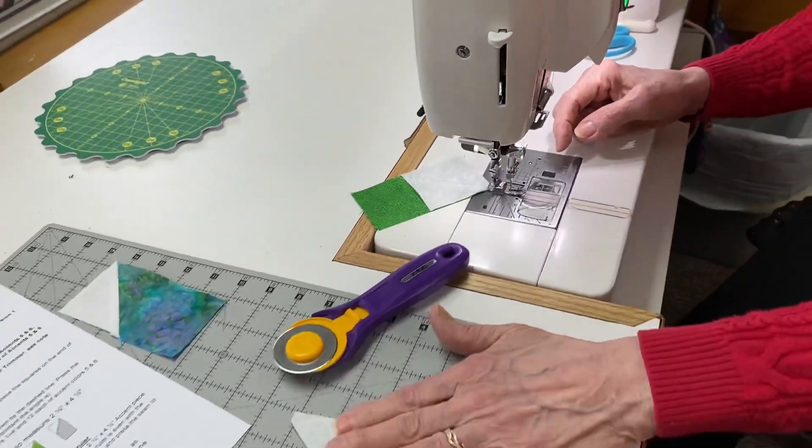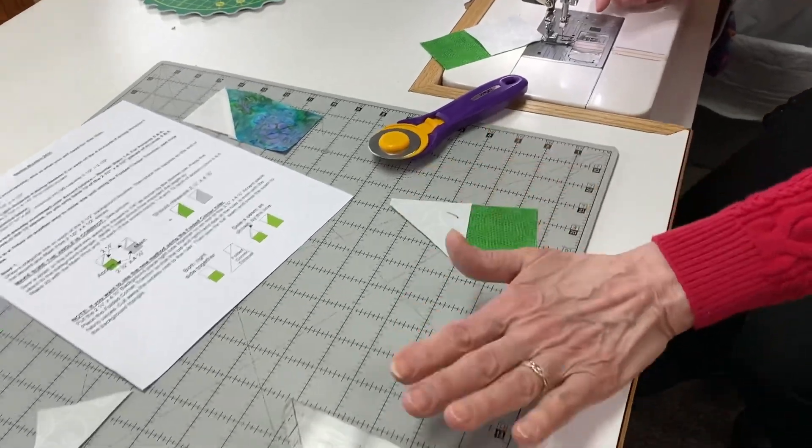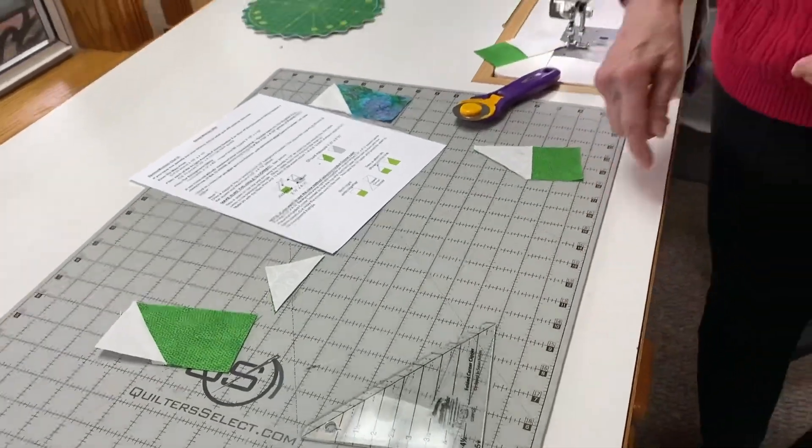This is another new way that we're using the folded corner trimmer, and I'll show you that one also in clue three.